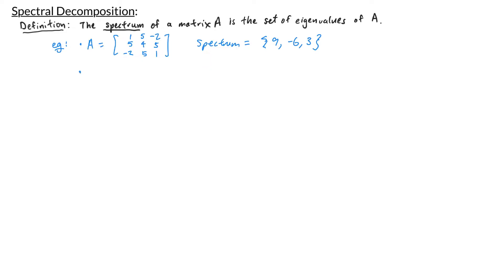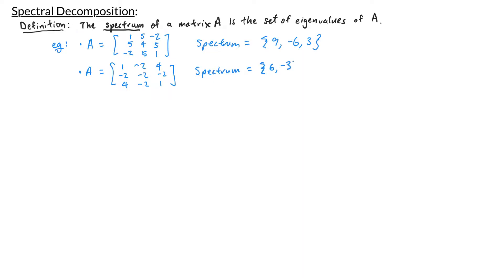In our previous video we looked at the matrix 1, -2, 4, -2, -2, -2, 4, -2, 1. We saw that the eigenvalues for this matrix were 6 and -3, so we would say that the spectrum for this matrix is the set {6, -3}.